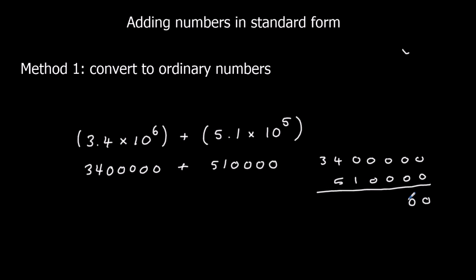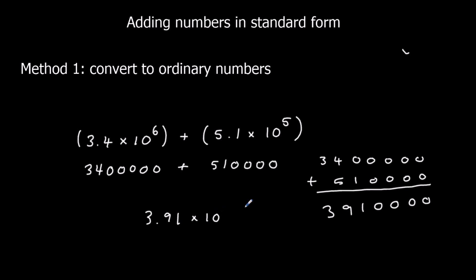Adding them up gives us 0, 0, 0, 0, 1, 9, and 3 — so that's the ordinary number. And then if we need to convert it back to standard form, we get 3.91 times 10 to the power of 6.